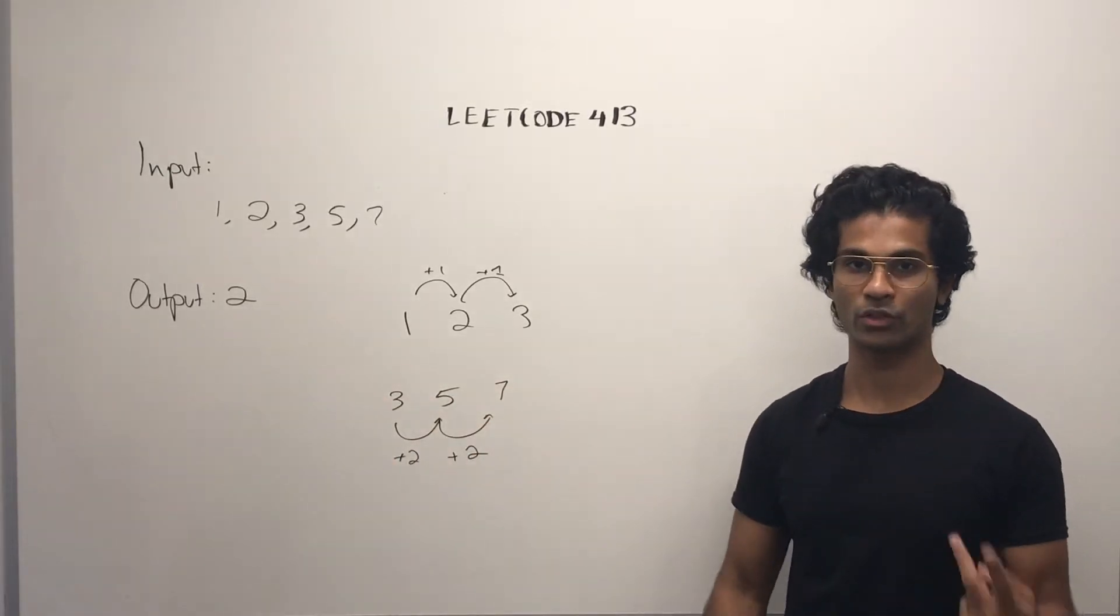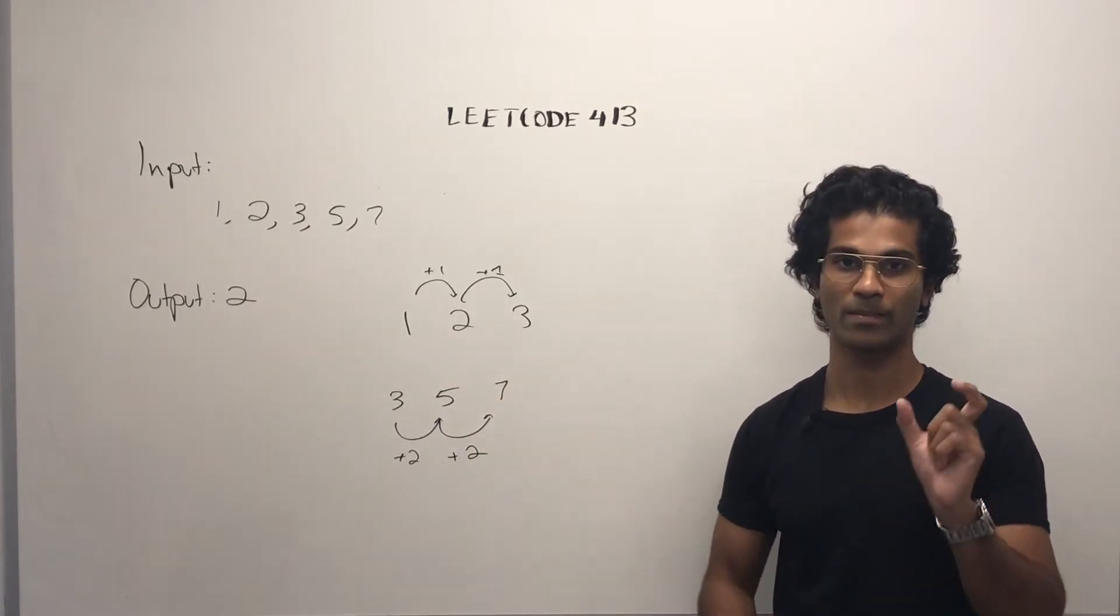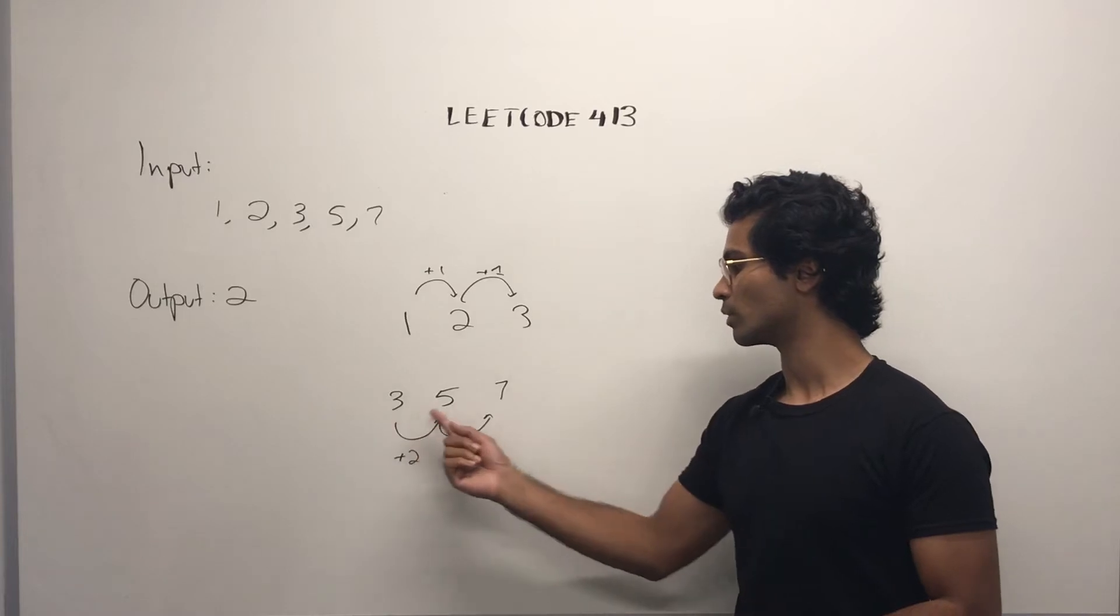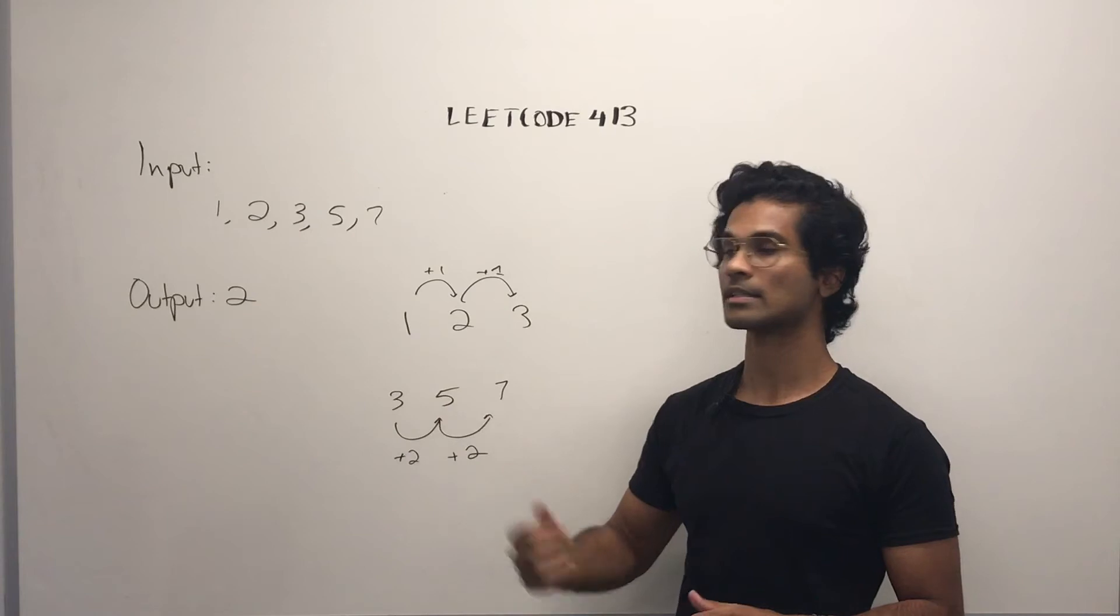Our output is going to be 2 because we have 1, 2, and 3 as a sequence, and the difference between them is 1. And we also have 3, 5, 7. The difference between them is 2. So these are two separate arithmetic slices.